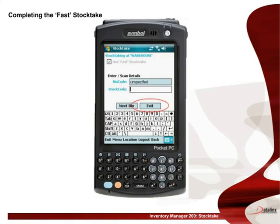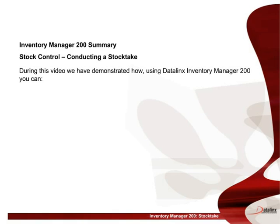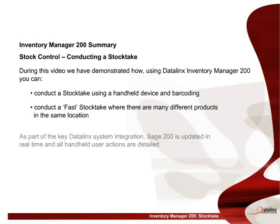We select exit to complete the fast stock take and return to the main menu. In summary, during this video we have demonstrated how, using Datalinks Inventory Manager 200, you can conduct a stock take using a handheld device and bar coding, conduct a fast stock take where there are many different products in the same location, and as part of the Datalinks system integration, Sage 200 is updated in real time and all handheld user actions are detailed.